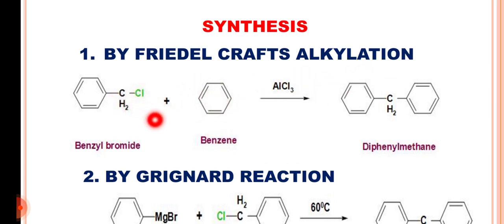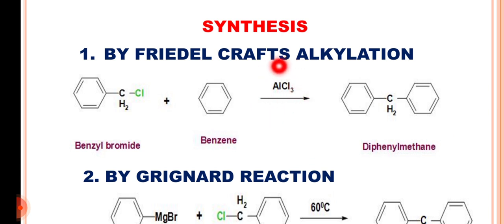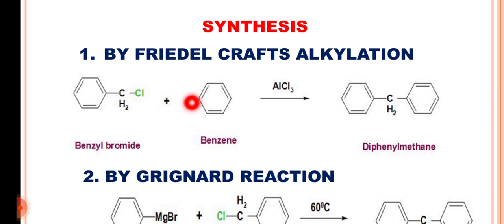In this synthesis, benzyl chloride reacts with benzene in the presence of aluminium chloride. The electrophilic aromatic substitution reaction takes place whereby one of the hydrogens of the benzene ring and this chlorine are liberated as HCl, and thus we get the formation of diphenylmethane.